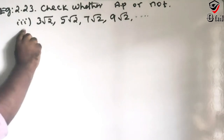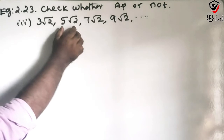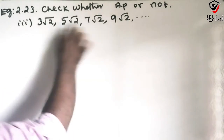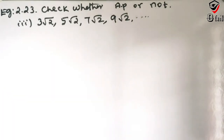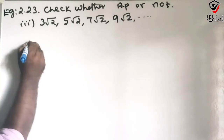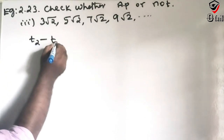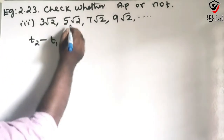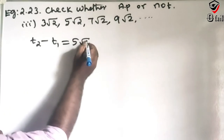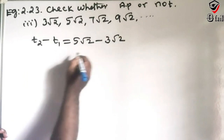Third problem: the terms are 3 root 2, 5 root 2, 7 root 2, 9 root 2. Check whether these form an AP.